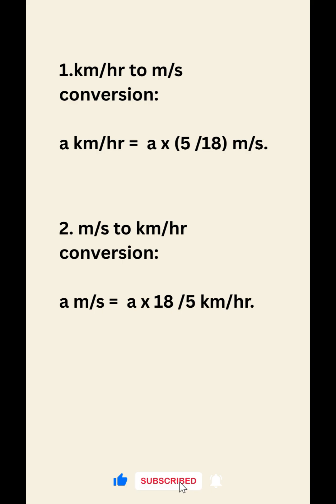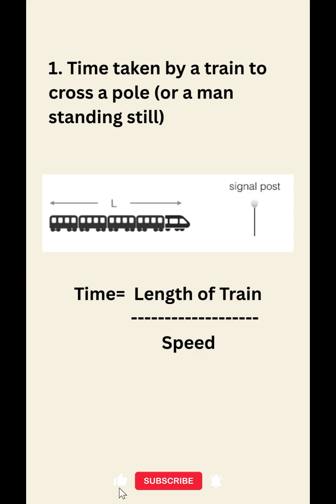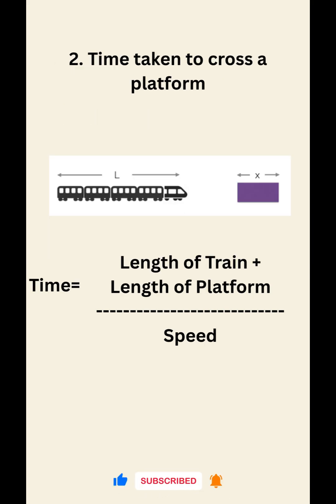Now let's understand the train formula. How long does a train take to cross a pole? The formula is: time equals length of train divided by speed.